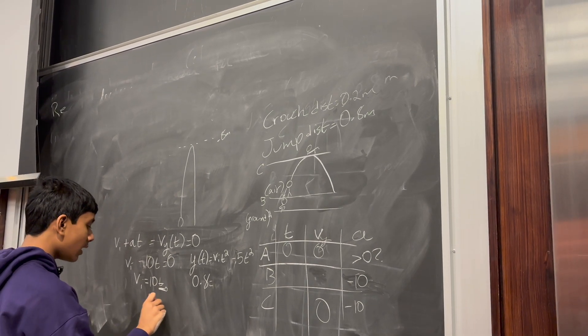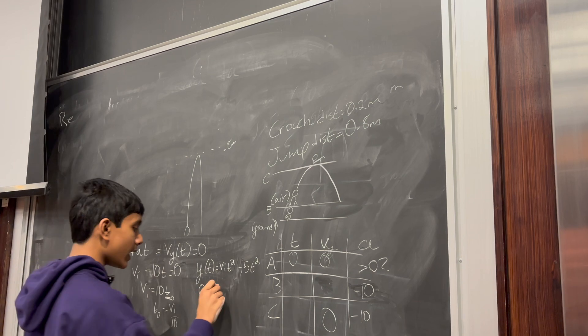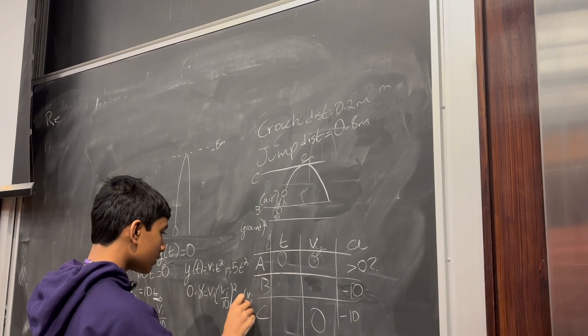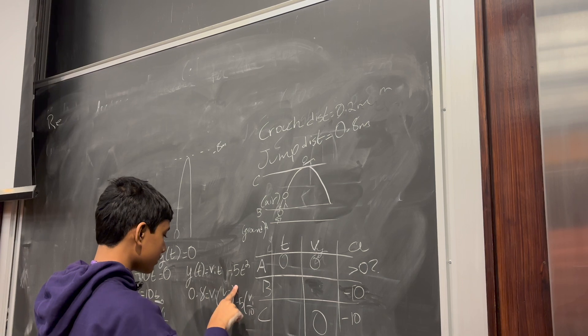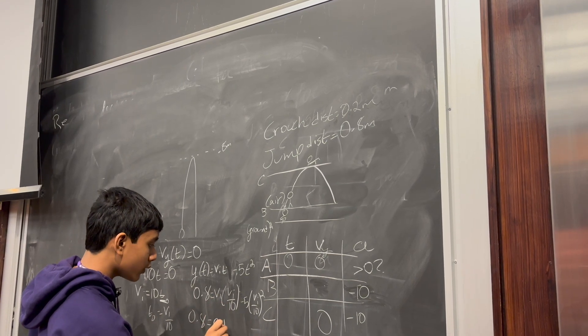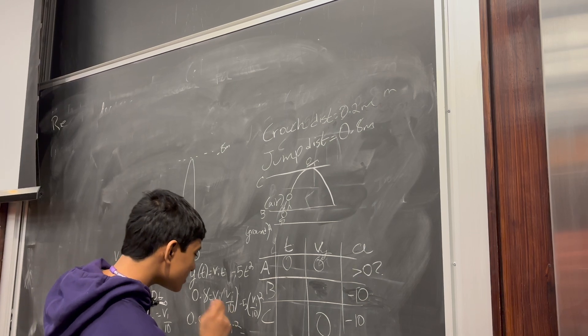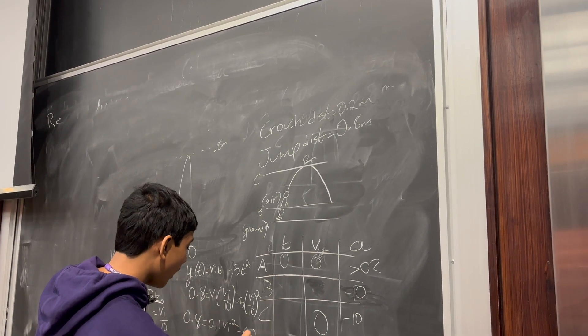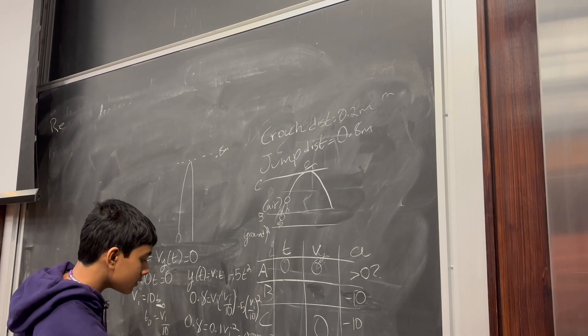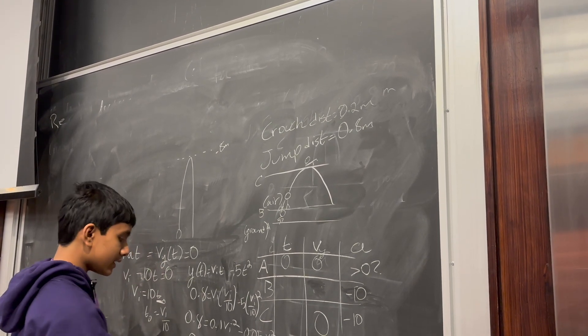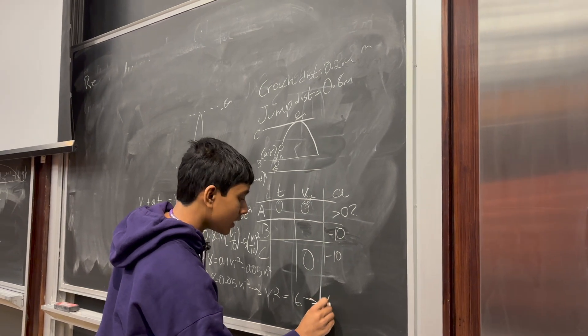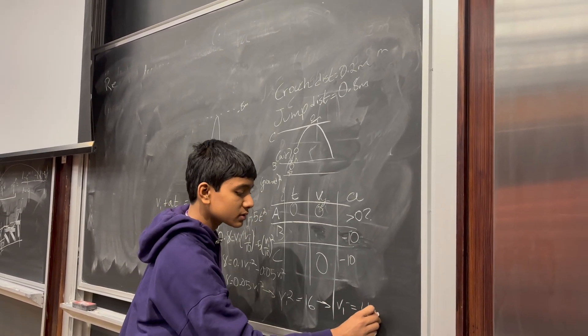We know that maximum height is 0.8. So, now, we plug in the fact that that time was exactly equal to Vi over 10. To get Vi times Vi over 10 squared. Minus 5 times Vi. So, we get 0.8 is equal to 0.1 Vi squared minus 0.05 Vi squared. Which means we get 0.8 is equal to 0.05 Vi squared. Which means that this is going to be multiplied by 20. So, that gives us 16 as Vi squared. Which means Vi is equal to 4 meters per second.